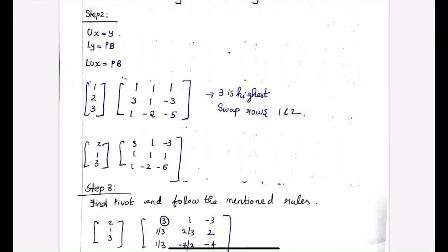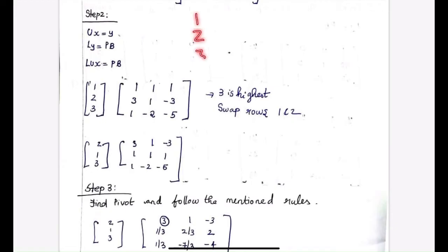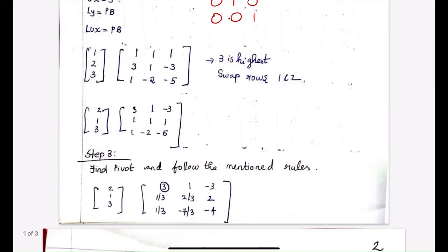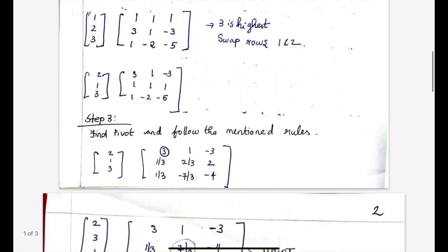While doing this, we need to remember to consider another matrix called the permutation matrix. The permutation matrix for 1-2-3 is going to look like an identity matrix: 1 0 0, 0 1 0, 0 0 1. The 1-2-3 indicates the position of the one in each particular row. While swapping the rows of the A matrix, we need to also change the rows of the permutation matrix. So initially we had 1-2-3, and now after swapping rows one and two, we have 2-1-3.